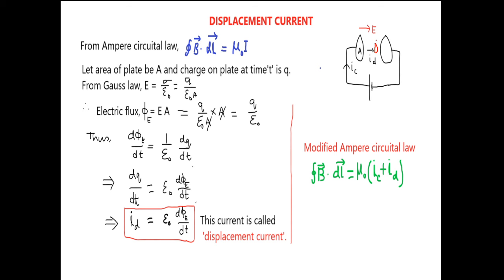And to apply Ampere circuit law, Maxwell named a current which is due to time dependent electric field as displacement current. Now its expression.